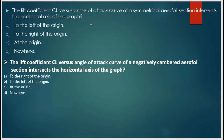Next question: the lift coefficient CL versus angle of attack curve of a symmetrical airfoil — where does it intersect the horizontal axis of the graph? For a symmetrical airfoil, the graph passes through the origin. The positive camber airfoil and negative camber airfoil graphs sit above and below respectively, but for the symmetrical airfoil the CL vs angle of attack curve intersects at the origin — the third option is correct.